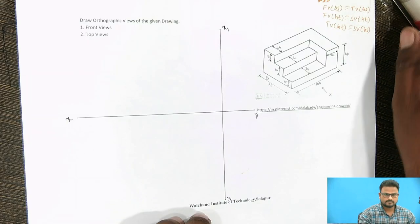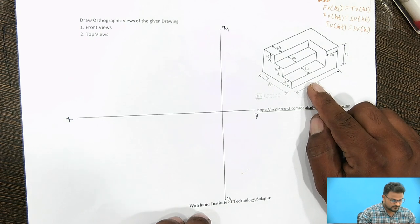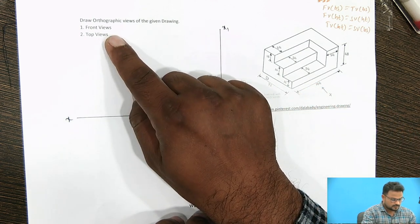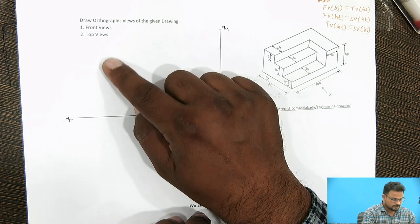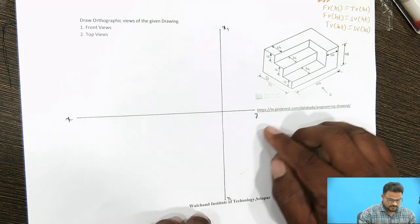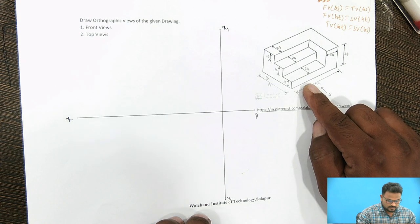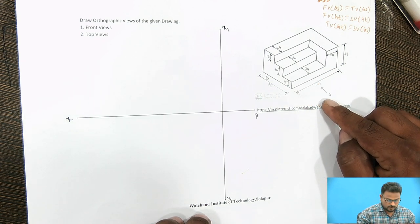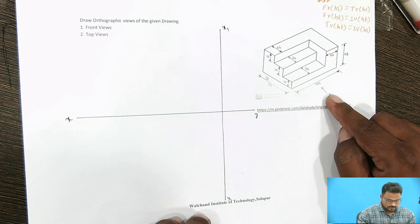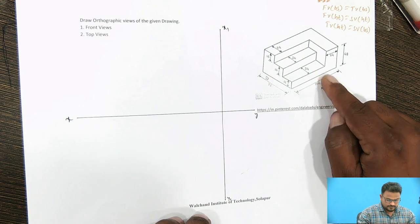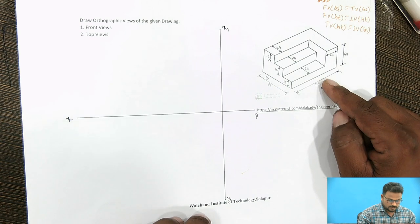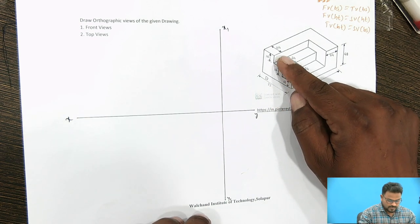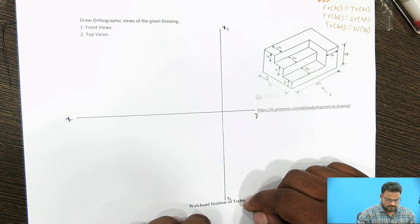Here is the simple object I have taken. For this one, we have to draw the orthographic views of the given drawing — that is, first one is the front view and second one is the top view. Using this figure, we are going to draw the top view and front view looking from the x-axis. When we see from the front, we will identify the parts visible and hatch the portions that are going to be visible.